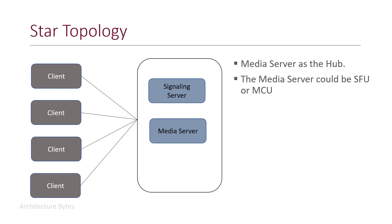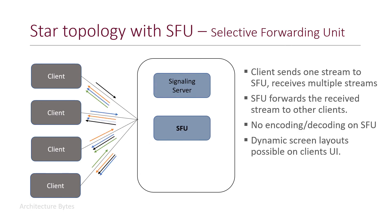Here the clients do not talk to each other directly. They send their outgoing streams to the media server and receive incoming streams from the media server. The media server could be an SFU or MCU. With an SFU, a selective forwarding unit, every client sends an outgoing stream to the SFU and receives multiple incoming streams from it. The SFU orchestrates the receiving and sending of media streams from various clients, with no encoding or decoding of media happening on the SFU.